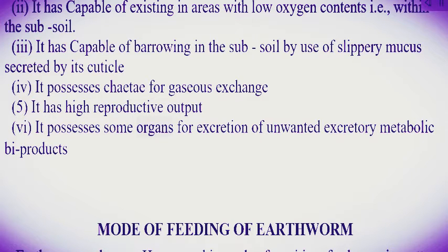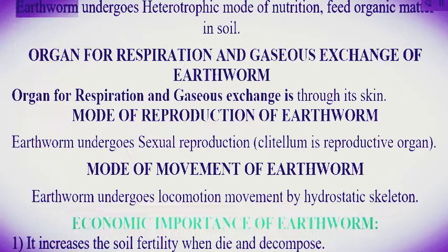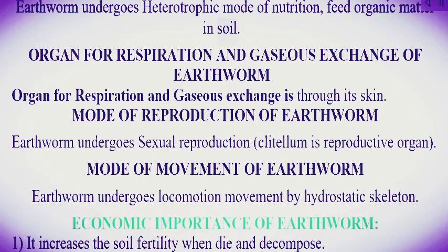Six, it possesses organs for excretion of unwanted excretory metabolic byproducts. Mode of feeding of earthworm: earthworm undergoes heterotrophic mode of nutrition, feeding on organic matter in the soil.